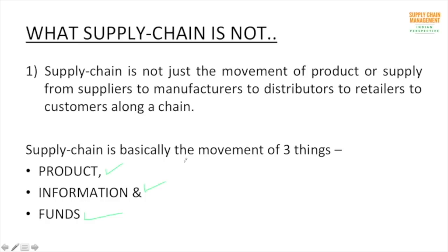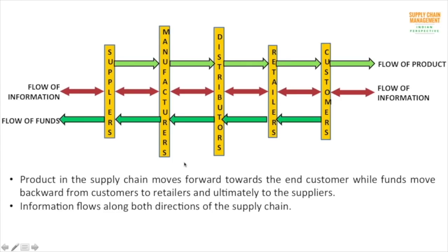We'll see the flow of all three — product, information, and funds — in every example. The light green arrows show the direction of flow of product: first, raw materials are supplied by suppliers to manufacturers; then manufacturers supply the material to distributors; and similarly to retailers; and then retailers supply the final product to customers. This is the flow of product, which we are already aware of.